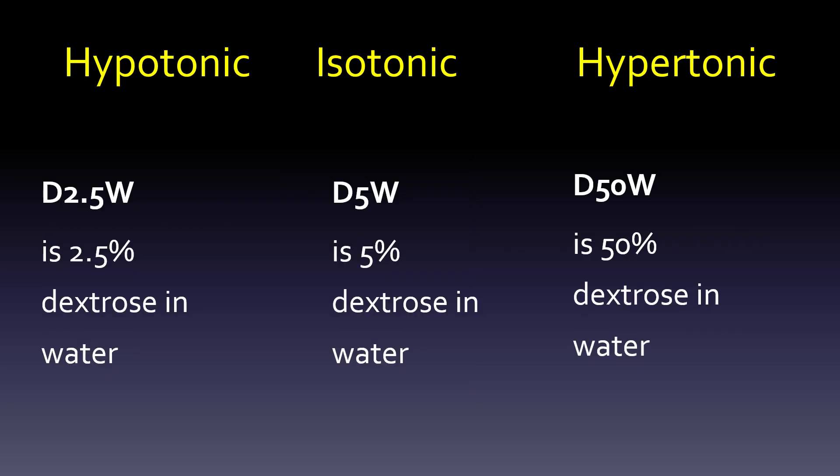D5W — 5% dextrose in water — is in the middle: isotonic. Hypotonic is 2.5% dextrose (D2.5W). Hypertonic is 50% dextrose (D50W). The key point: your middle for dextrose is D5W, just as 0.9% is the middle for sodium chloride.